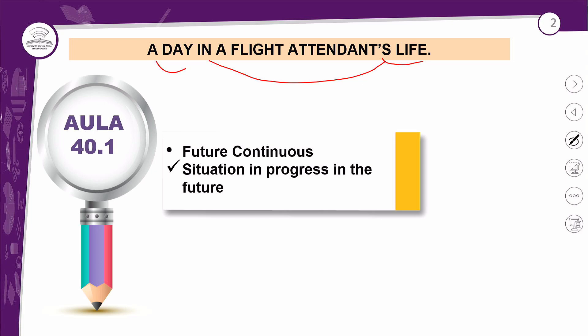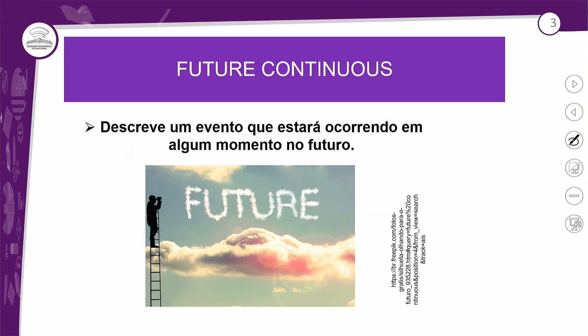Vamos ver Future Continuous, futuro contínuo, que vai falar sobre situação em progresso no futuro — 'situation in progress in the future'. O futuro contínuo descreve um evento que estará ocorrendo. Por que 'ocorrendo'? Porque é continuous, é progressive. Ou seja, tem progressão, está acontecendo, e vai acontecer em algum momento lá no futuro.